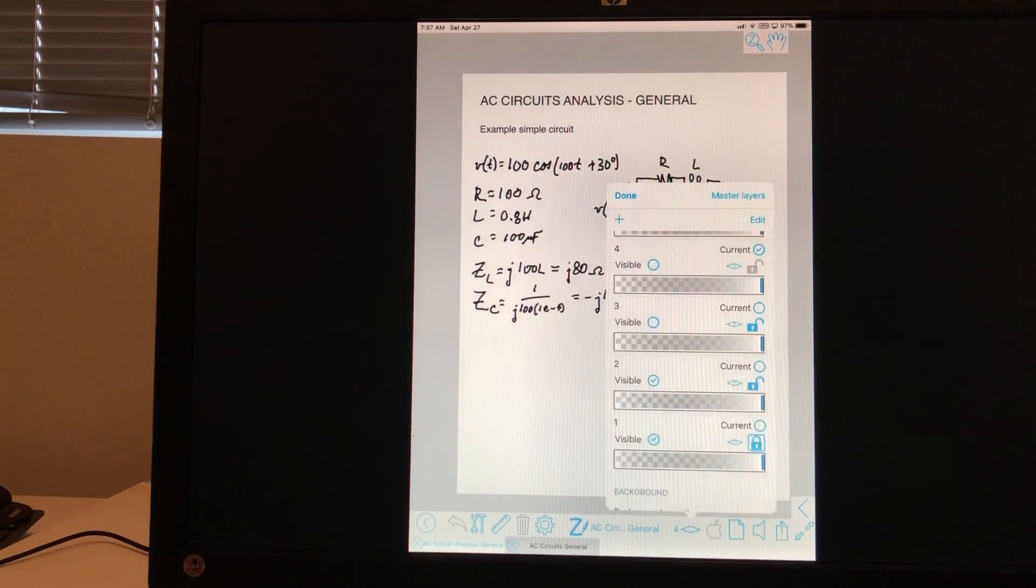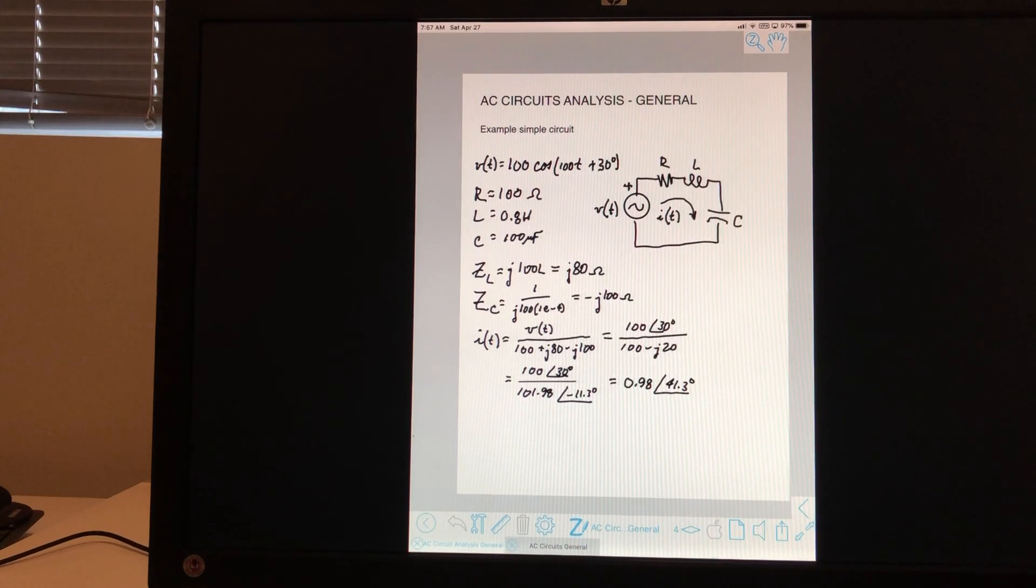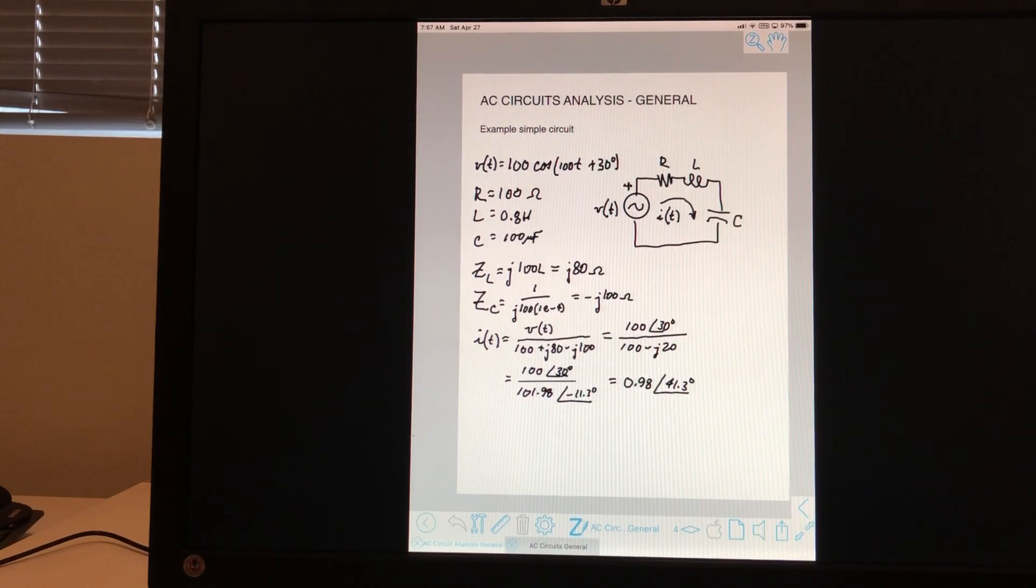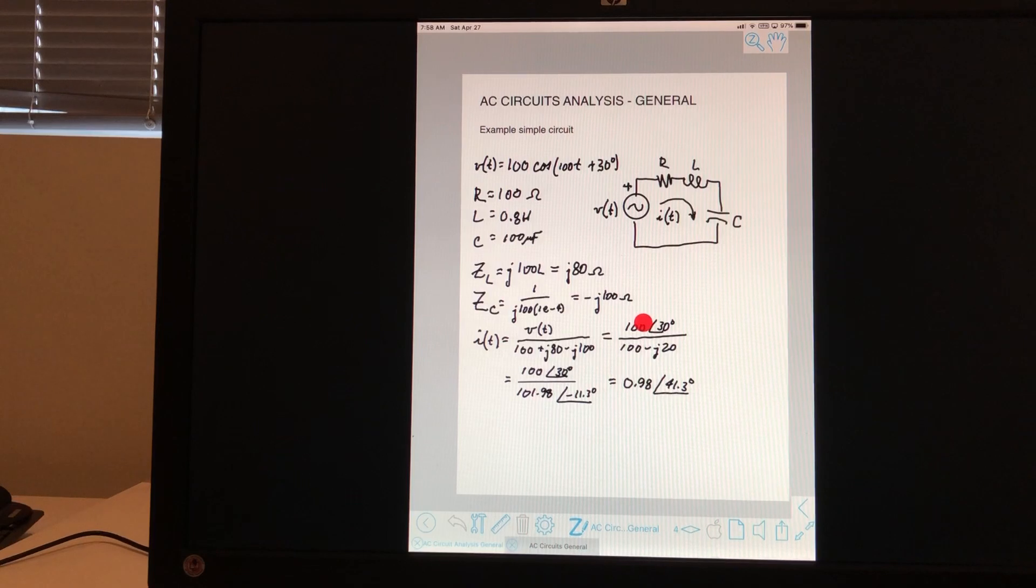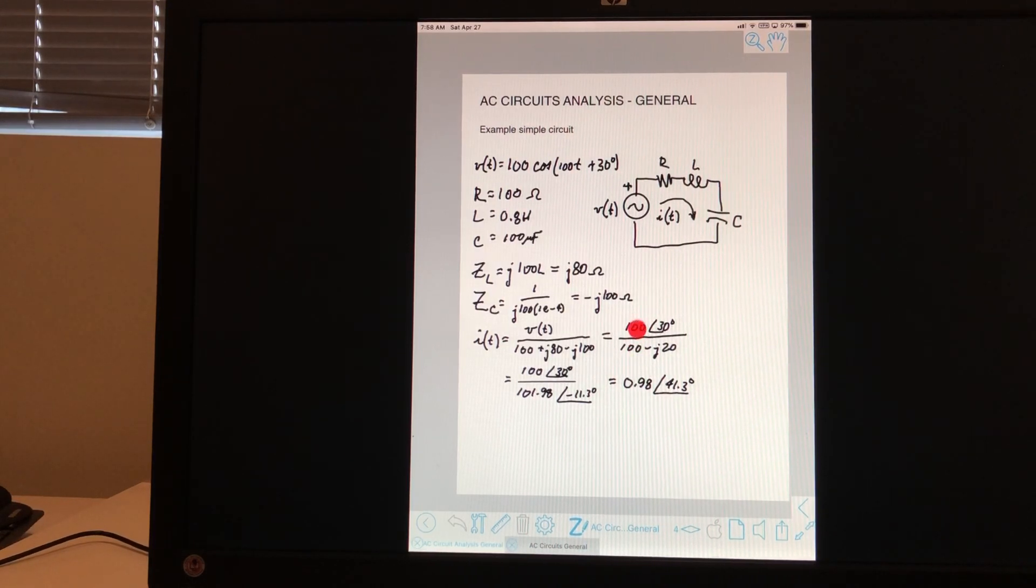We can just add those together as we do here. You can see that what we've done is we've created an Ohm's law expression where I is equal to V over Z in this case. And we've added the three impedances together. Here's the resistance, inductive impedance, capacitive impedance. And so we end up with this complex expression.